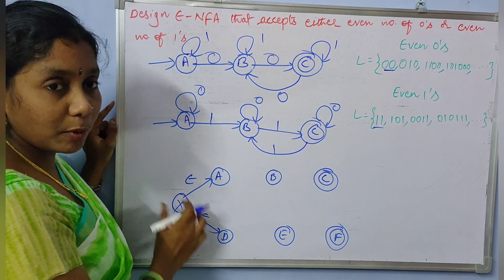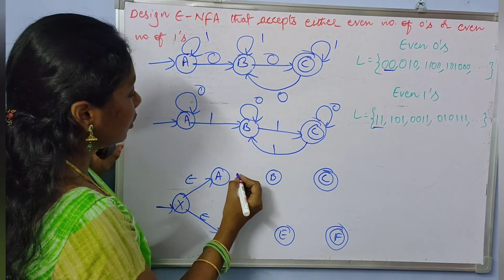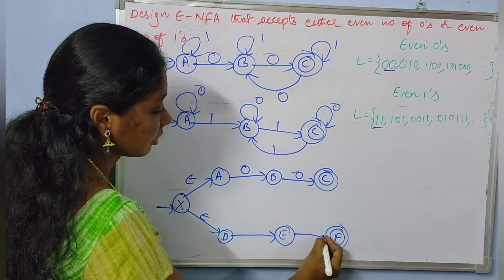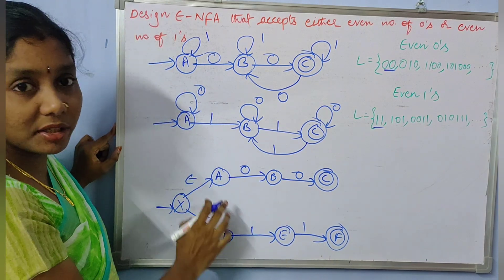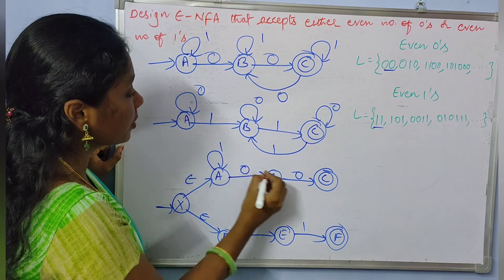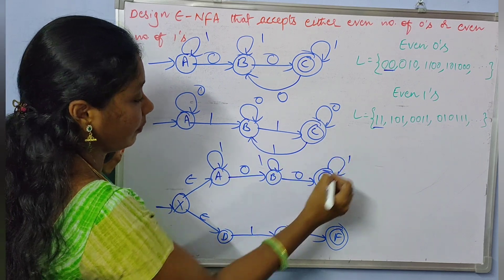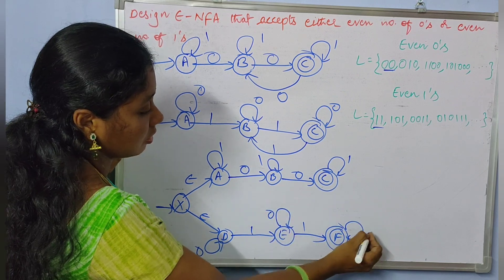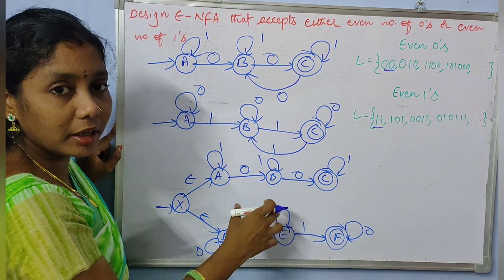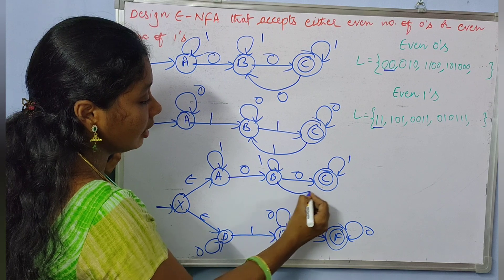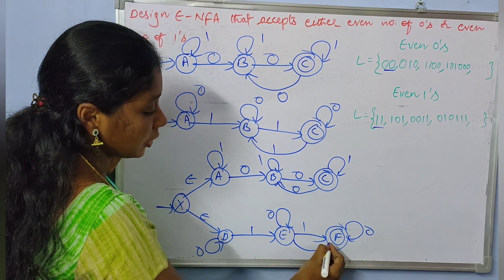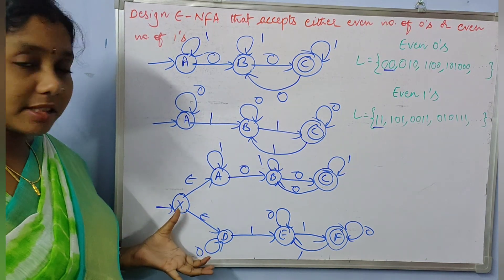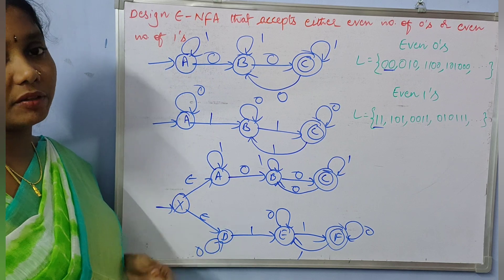From the new start state X, epsilon transitions lead into both sub-NFAs. The first sub-NFA has transitions on zero-zero and self-loops on one. The second sub-NFA has transitions on one-one and self-loops on zero. To make even number of zeros acceptable, I extend the first NFA with the back-transition from C to B on zero, and similarly for the second NFA with a back-transition on one. This completes the epsilon NFA design for accepting even number of zeros or even number of ones.